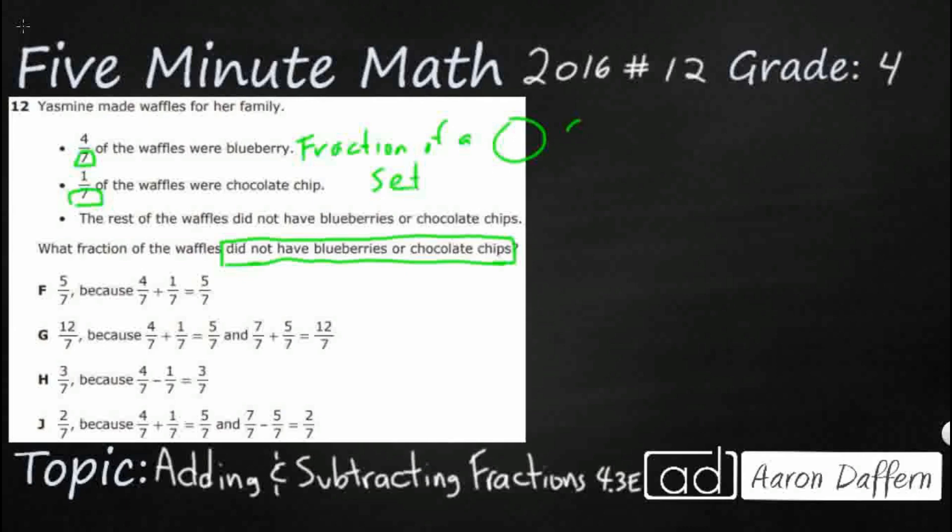Let's go ahead and do that: one, two, three, four, five, six, seven. We've got our seven waffles there, and we can just start labeling it. Four sevenths of the waffles, that is going to be blueberries. I'm just going to put a B right here. Here's my four sevenths.